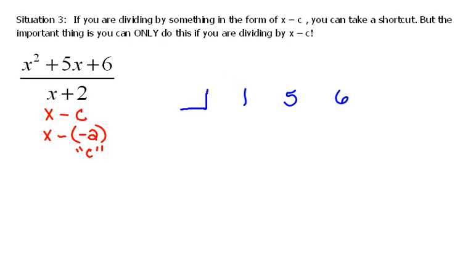Now, out here, sort of in like an upside-down division sign, we're going to put our c value, or what we're dividing by. And we found that that is negative 2.